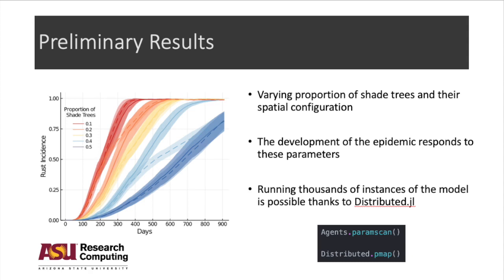These are the results of a parameter sweep regarding the proportion of shade trees and the spatial configuration. On the x-axis is the time in days, and on the y-axis is the rust incidence as the proportion of coffee trees infected over the total. And we can see that the development of the epidemic does respond to the change of these parameters. This means that, at least in this model, the design of the farm in terms of the number and the placement of shade trees can have an effect on the control of potential coffee leaf rust epidemic.